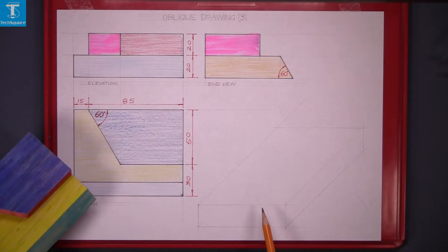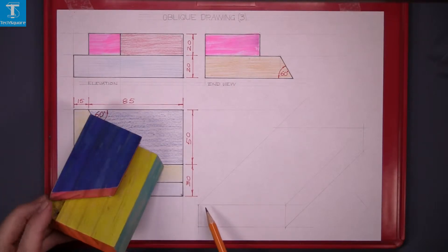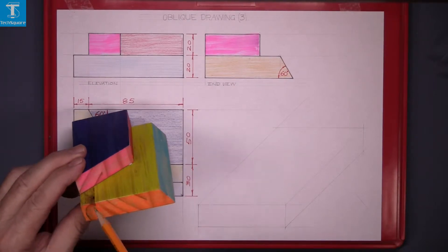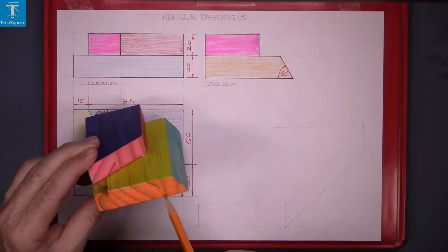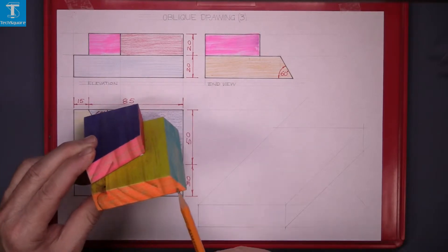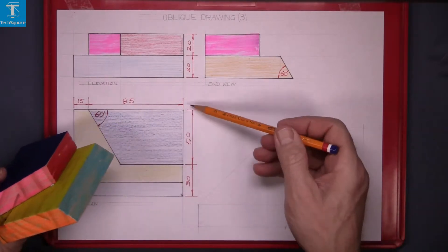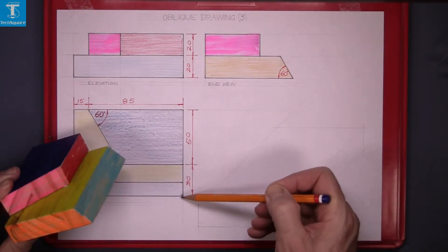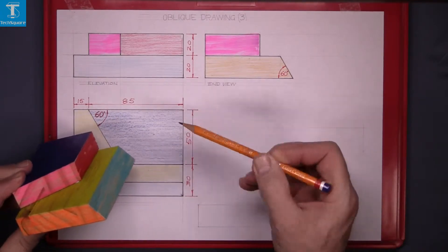We want to draw the oblique view. I've marked off the size of the end here. The width of this piece here is 50 plus 30. The distance from there to there is 80.